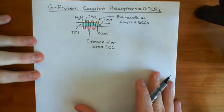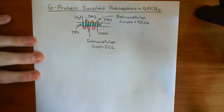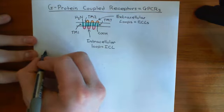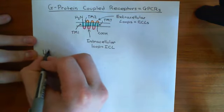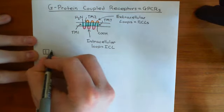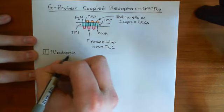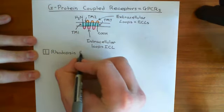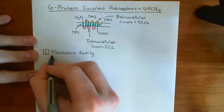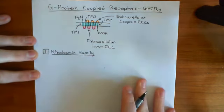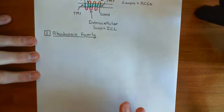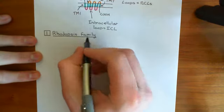Because there are 800 G-protein coupled receptors in the human body, it becomes helpful to group them into families based on structural features. G-protein coupled receptors are often divided into five families. Family number one is called the rhodopsin family, because the receptor rhodopsin — which responds to light — is within this family and is a very notable, highly studied member.